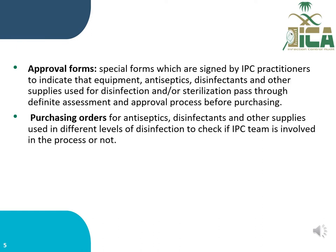The document review method for auditing this sub-element includes reviewing those requests, as well as checking the availability of approval forms and purchasing orders that require recommendations, approval, and assessment from the Infection Prevention and Control Department before purchasing any disinfectant, supplies, or IPC equipment required for implementing the IPC Program in any healthcare facility.